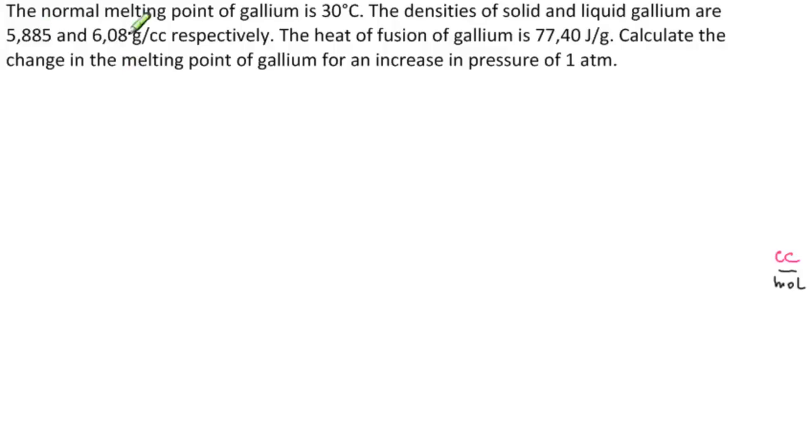The problem reads: the normal melting point of gallium is 30 degrees Celsius. The densities of solid and liquid gallium are 5.885 and 6.08 grams per cubic centimeter, respectively. The heat of fusion of gallium is 77.40 joules per gram. Calculate the change in the melting point of gallium for an increase in pressure of 1 atmosphere.